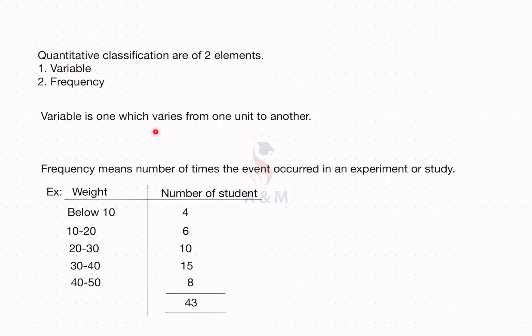A variable is one which varies from one unit to another. For example, marks, income, etc. Whereas frequency means the number of times the event occurred in an experiment or study. For example, here weight is given — that is the variable — and the number of students given is the frequency: 4, 6, 10, 15, 8, and so on. The variable is expressed as x and the frequency is expressed as f.